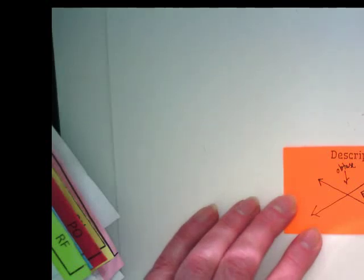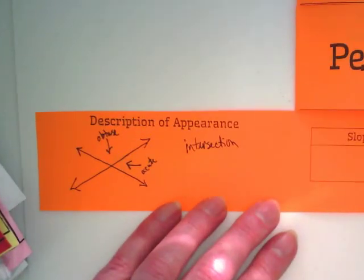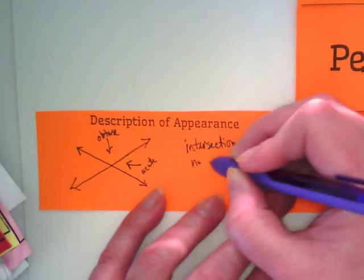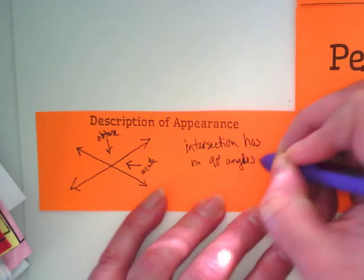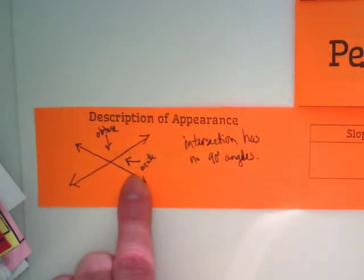Meaning that their intersection, because I zoomed in I was off screen, thank you for letting me know, the intersection has no 90 degree angles. Yeah, the wider angle is the obtuse angle and the acute is the narrower.